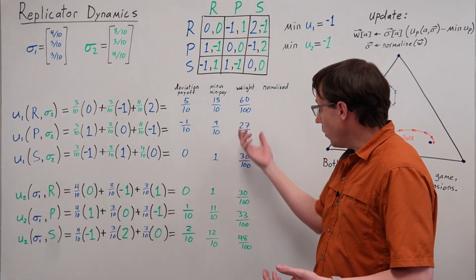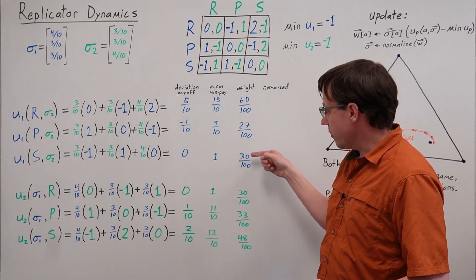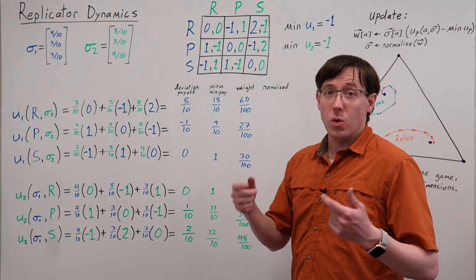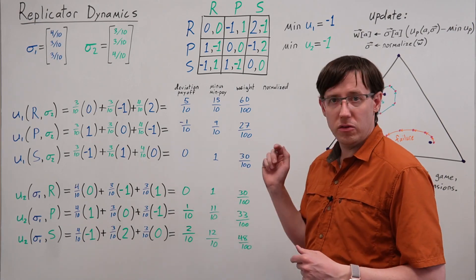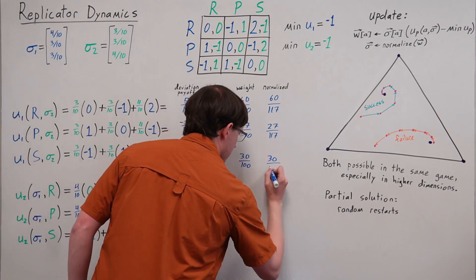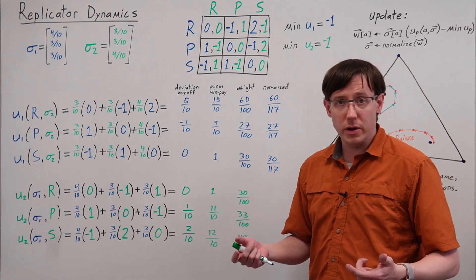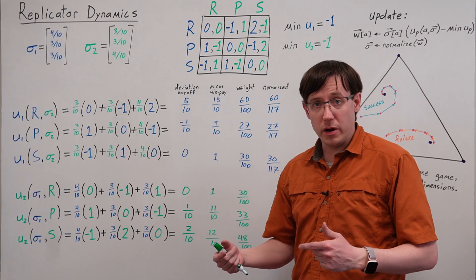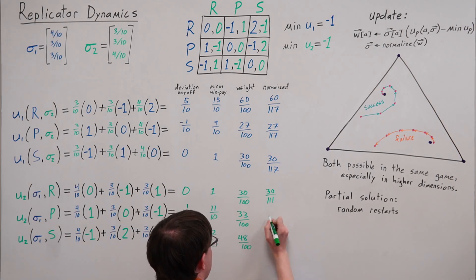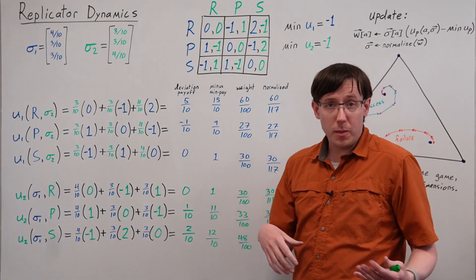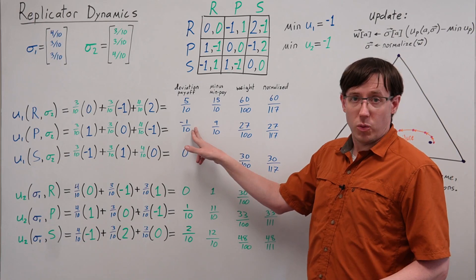Now we'll normalize these weights back into mixed strategies. When we add sixty plus twenty-seven plus thirty over a hundred, we'll get one-seventeen over a hundred, so we can multiply by a hundred over one-seventeen to normalize. When we add up player 2's probabilities, thirty plus thirty-three plus forty-eight over a hundred gives us one-eleven over one-hundred, and we can divide by that to get player 2's new mixed strategy. Again, our update has increased the probability of the best actions and decreased the probability of the worst actions.